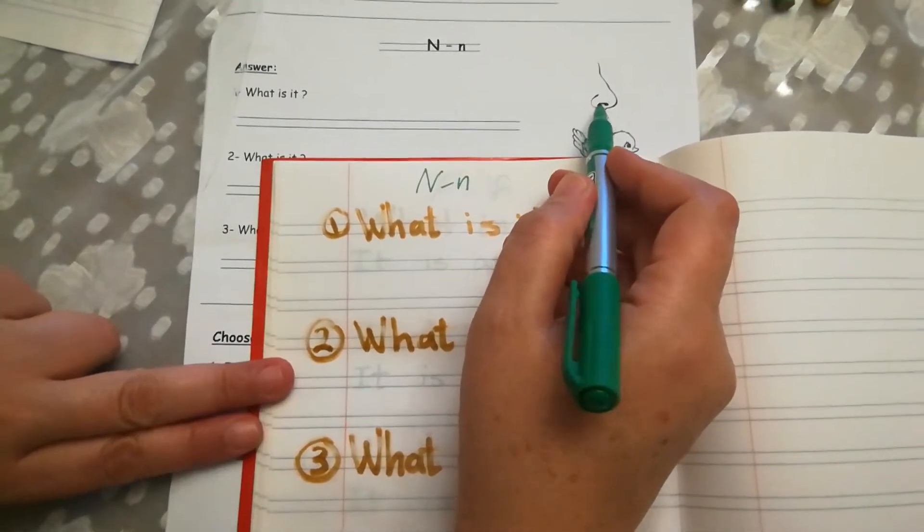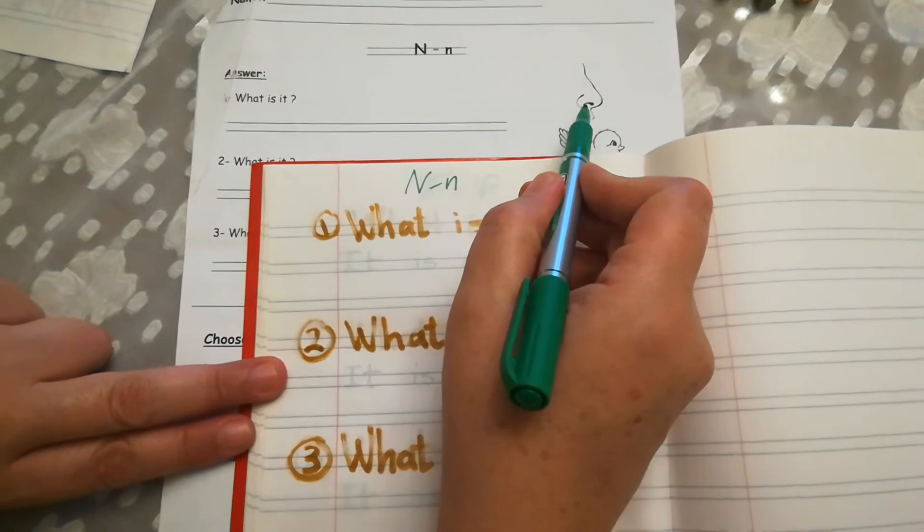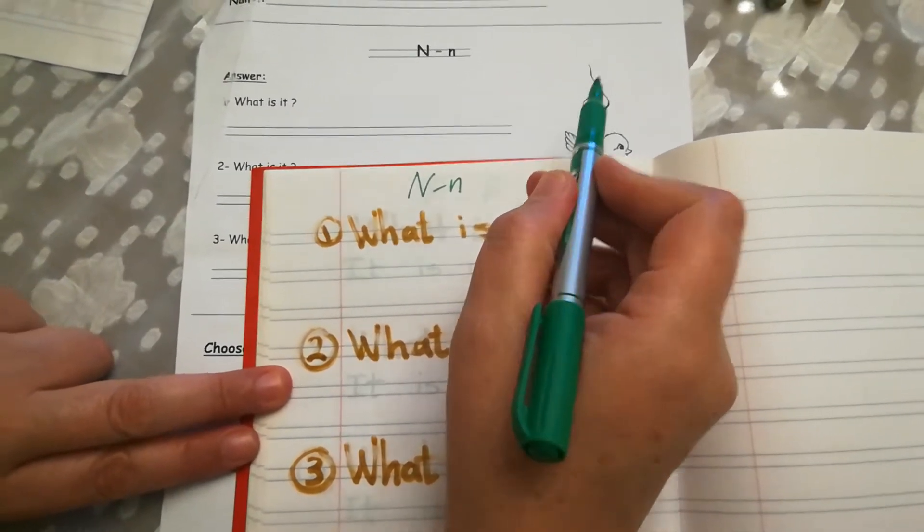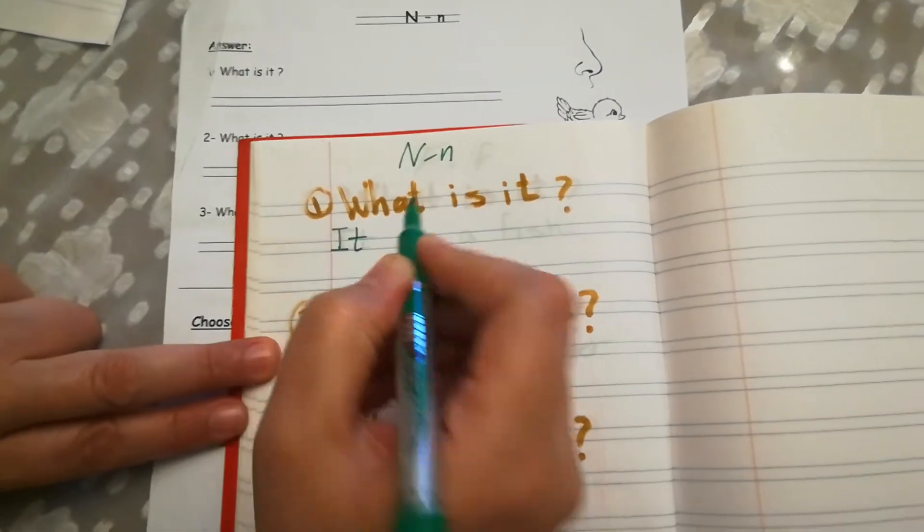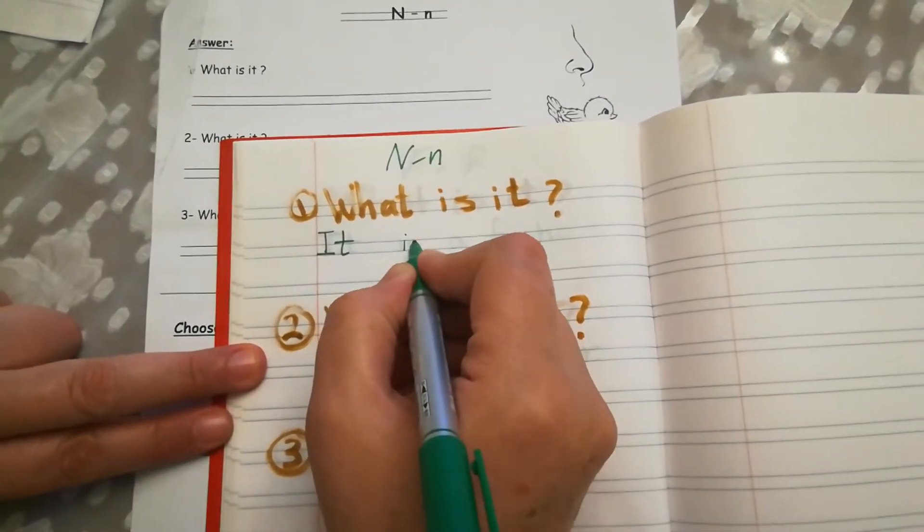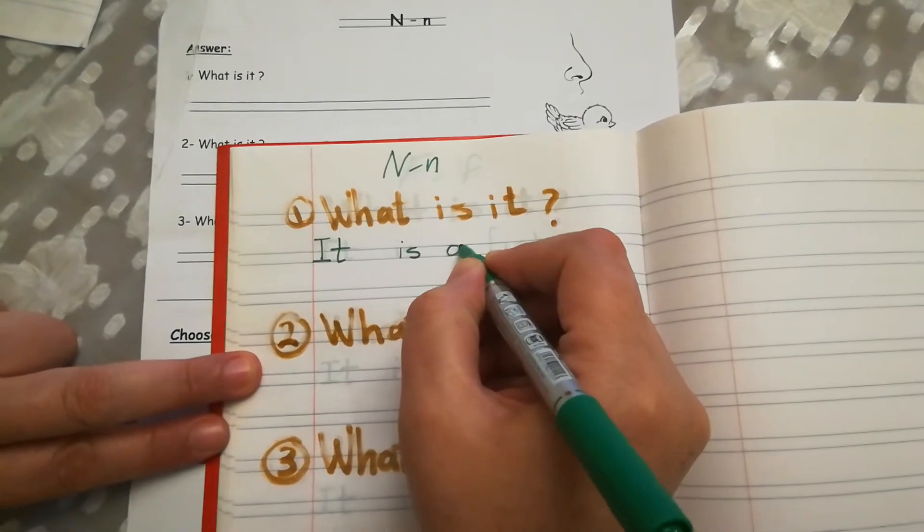Picture number one. What is it? Nose, nose. It is a nose. Let's try. Capital letter I, small letter T, it. Small letter I, small letter S, is. A, small letter A.